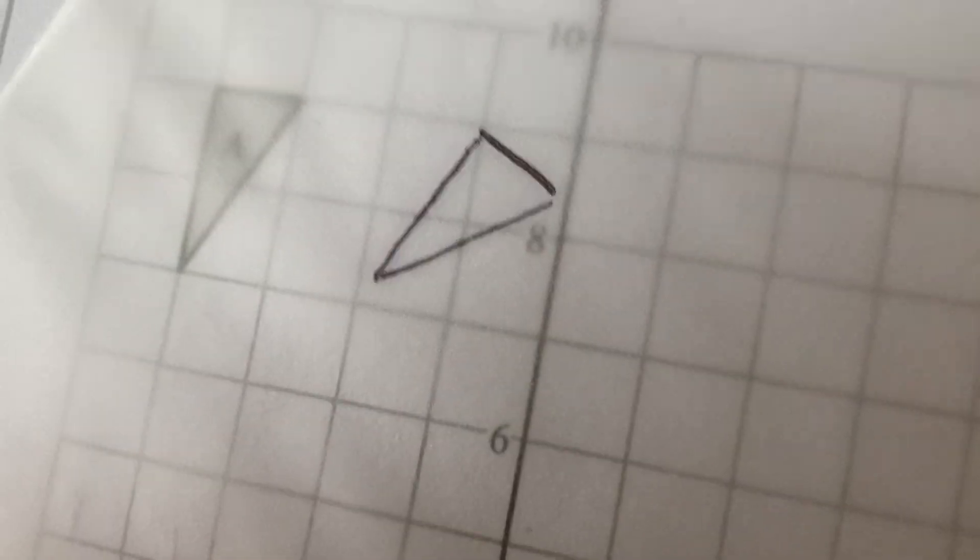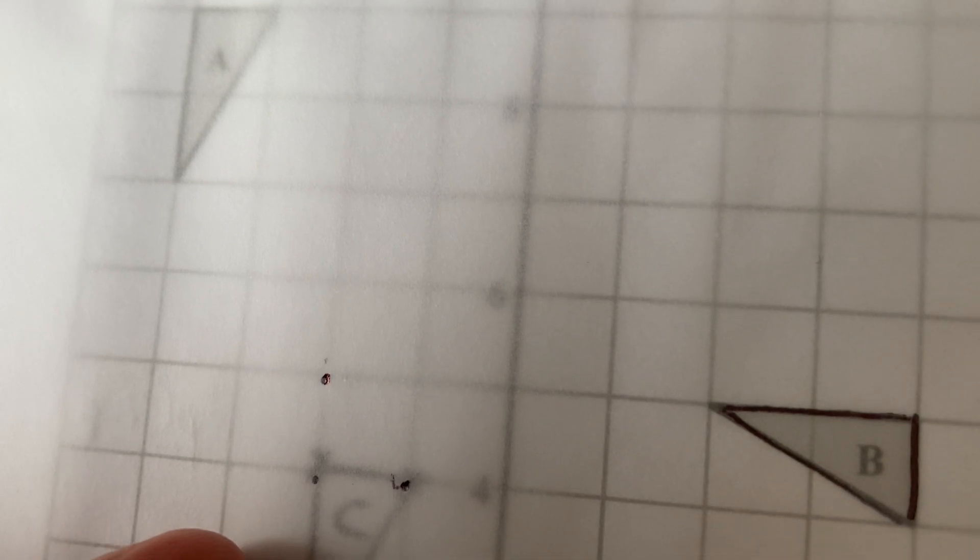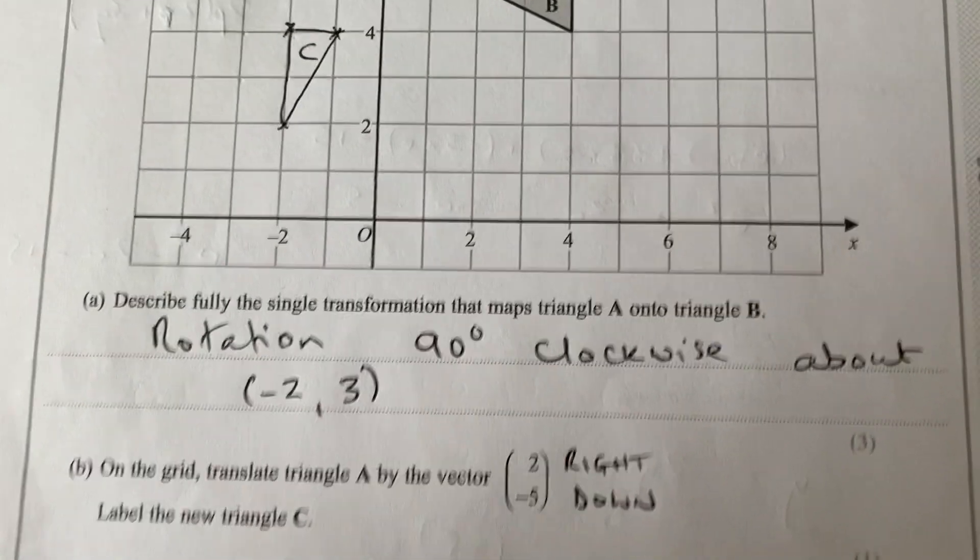If you rotate it, I normally use a compass to hold it down. If you rotate it up to about that point there, it rotates nicely onto shape B, which means that the center of rotation is the point minus two, three.